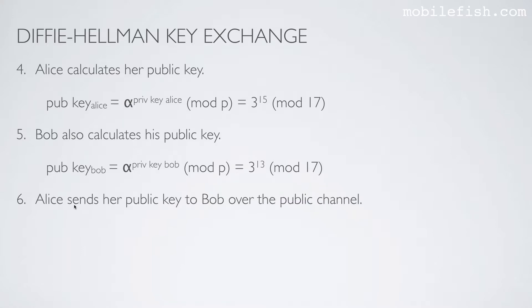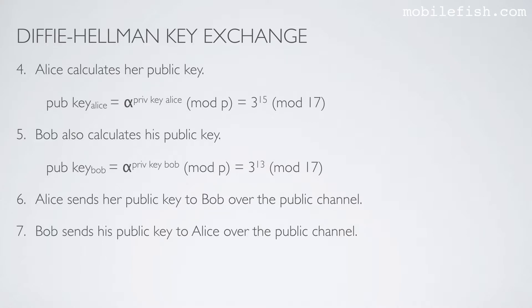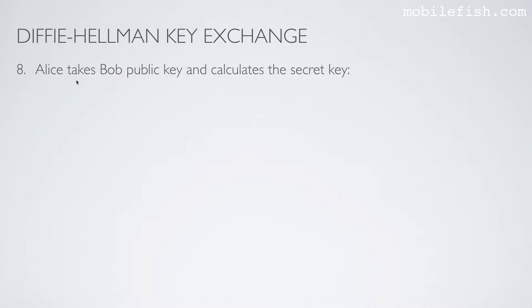Step 6. Alice sends her public key to Bob over the public channel. Step 7. Bob sends his public key to Alice, also over the same public channel.